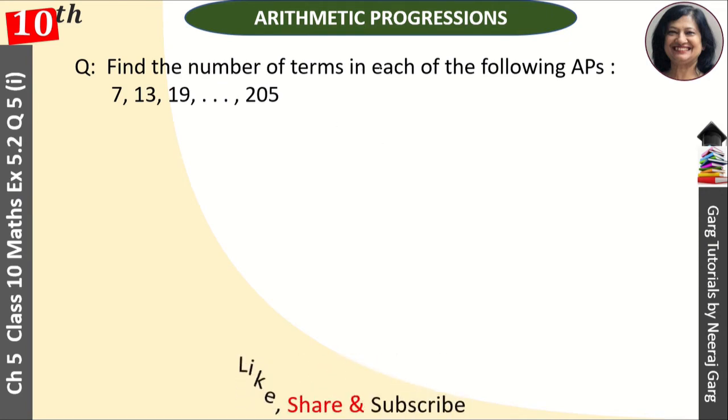Find the number of terms in each of the following APs. And we have an AP given as 7, 13, 19 up to 205. And we have to tell the number of terms.